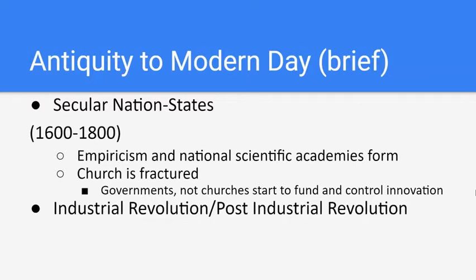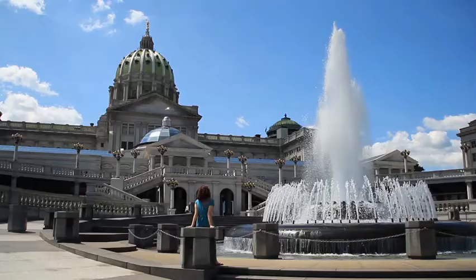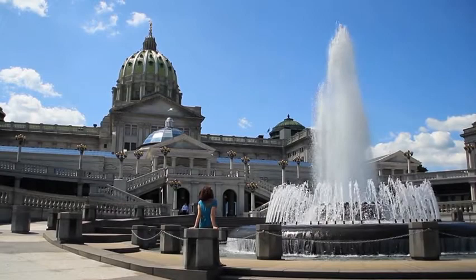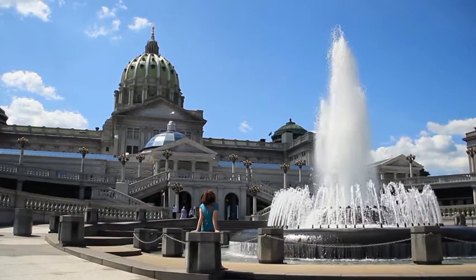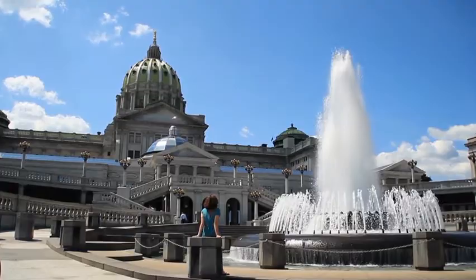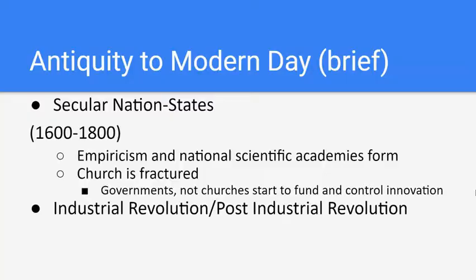Eventually the church starts to lose its power and secular nation states develop their own governments. This is good for free thought, but national scientific academies only allow the rich and powerful to participate. So from antiquity all the way to 1800, we have almost nothing to show because information isn't being passed down to the masses — things are being lost along the way.